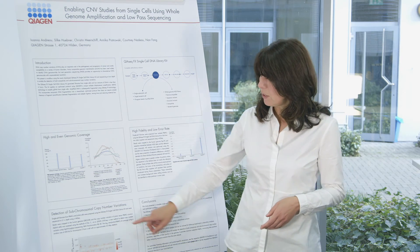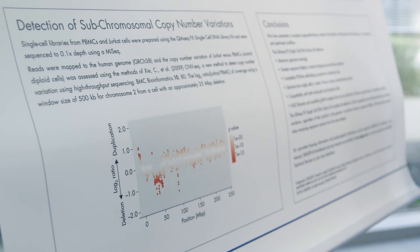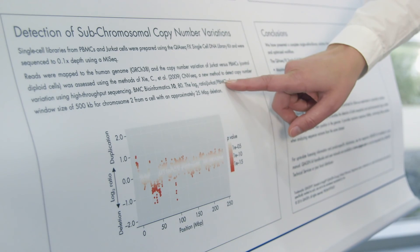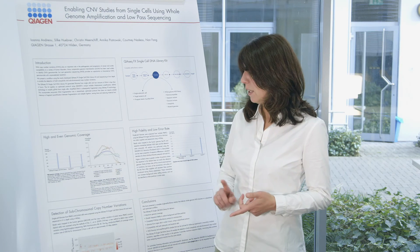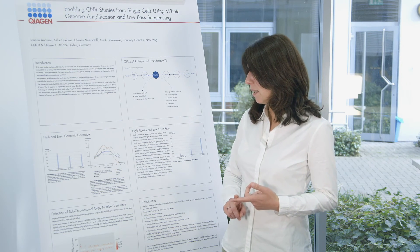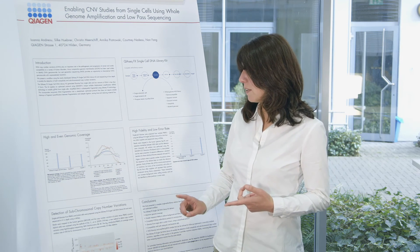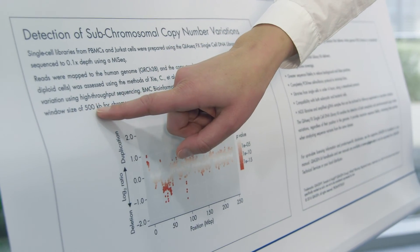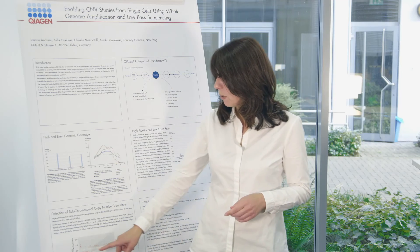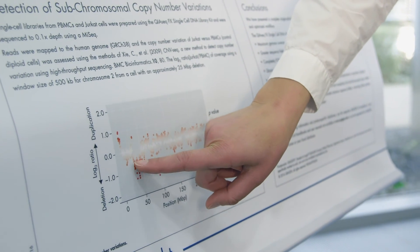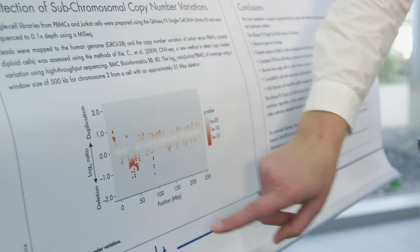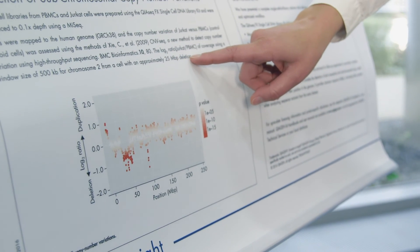And what we are showing you here is the log2 ratio of coverage Jurkat cells to PBMCs and we have counted this coverage in bins of 500 kilobases, and what we can see here we can detect a deletion on chromosome 2 of about 25 megabases.